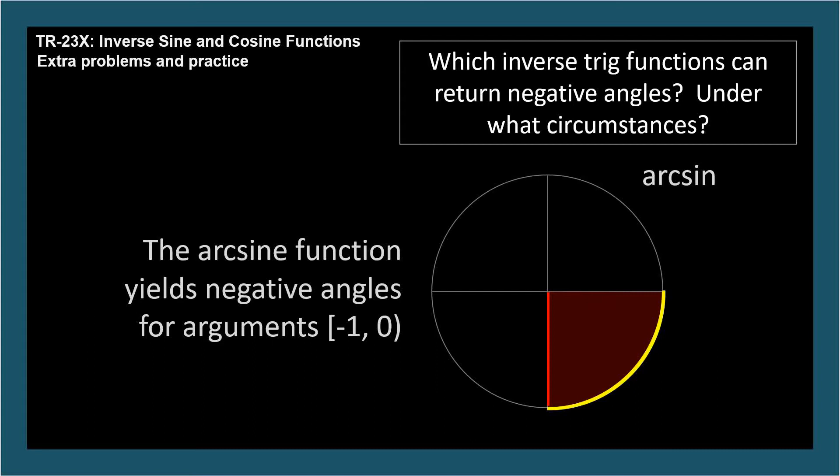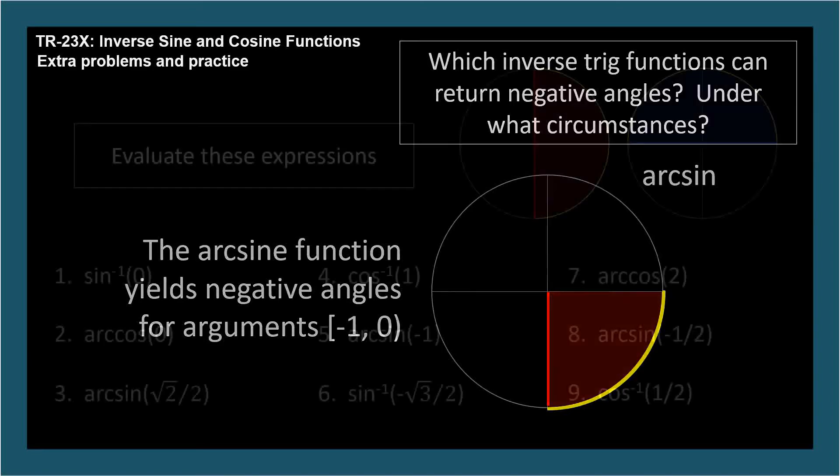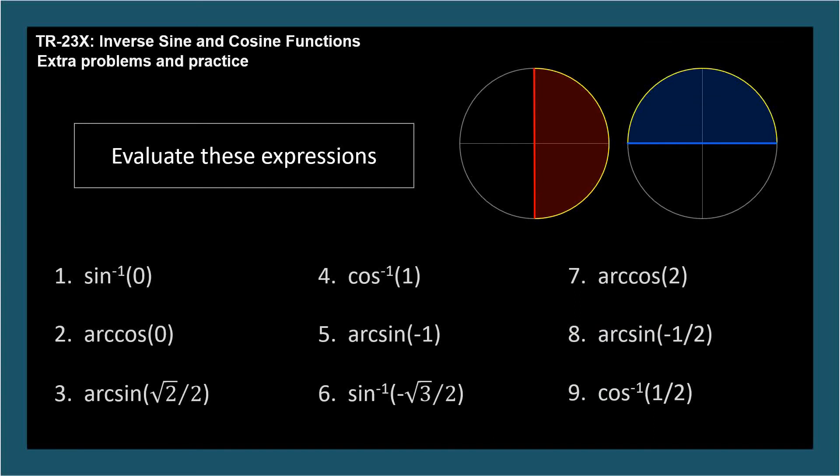So that's the answer. The answer to the question is, the arcsine function can return negative angles. Here are some inverse expressions for you to evaluate. I've jumbled up the negative 1 superscript and the arc prefix so you get accustomed to both. But they mean the exact same thing.